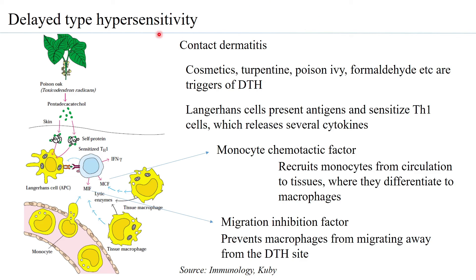Delayed type hypersensitivity can also be seen in graft rejection. When a transplanted organ is not properly matched, the recipient produces large numbers of CD4+ and CD8+ T helper cells, which eliminate the transplanted tissue — demonstrating a delayed type hypersensitive reaction.